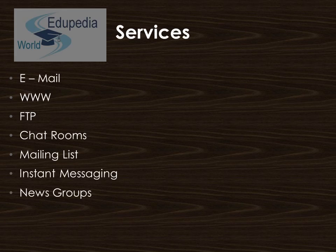Now let's have a look at the services of the internet. Electronic mail, or email, is a method of exchanging information or digital messages from an author to one or more recipients. Email servers accept, forward, deliver, and store messages, and neither the users nor the computers are required to be online simultaneously. Then comes the World Wide Web, the most important service provided by the internet — an internet-based hypermedia initiative for global information sharing.